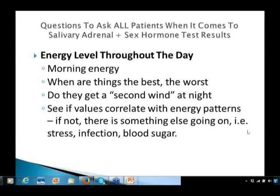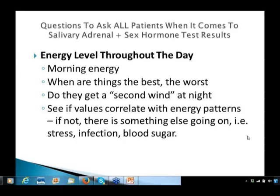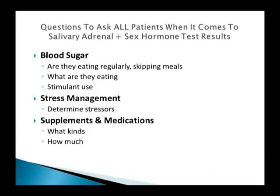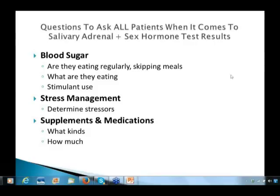Consider energy level throughout the day. Is energy better in the morning? When is it best or worst? Do they get a second wind at night? That's very typical of adrenal exhaustion — getting a second wind in the evening that then interferes with sleep. See if the values correlate with their energy patterns; if not, there may be something else going on — stress, infection, or a blood sugar issue. Blood sugar is a big factor with adrenal issues. Ask if they're eating regularly, skipping meals, using stimulants, and what stressors may be causing mental-emotional problems, as well as what supplements and medications they're taking.